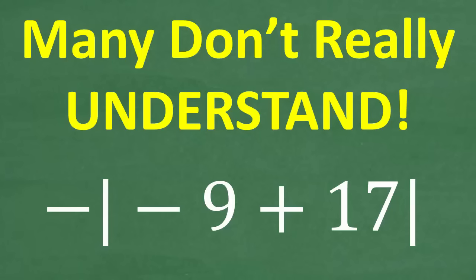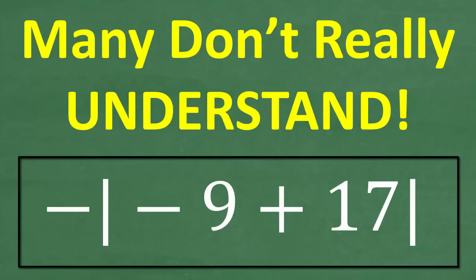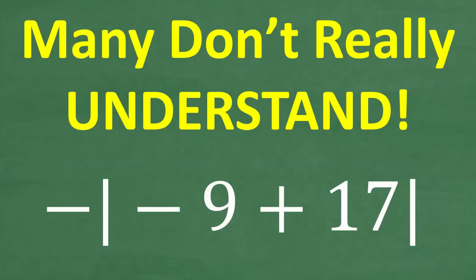So, a lot of people could figure out this basic math problem. Matter of fact, let's go ahead and take a look at the problem. We have negative of absolute value of negative 9 plus 17. And, of course, we want to see what this is equal to. And we don't want to use our calculator, but here is the problem.